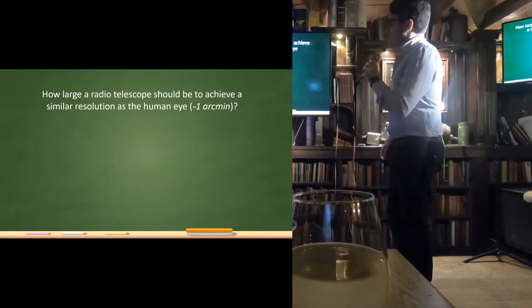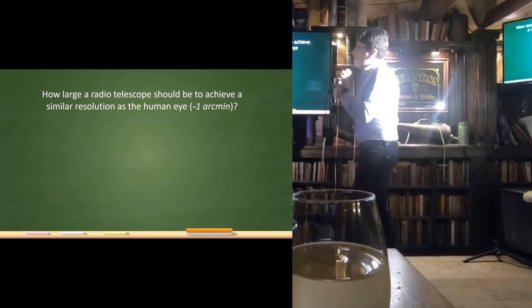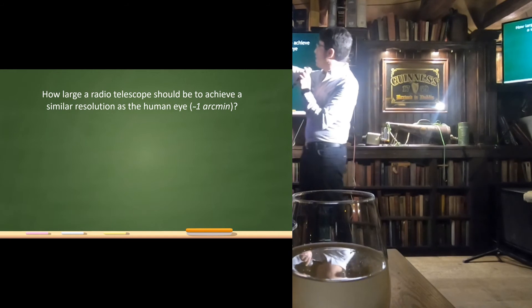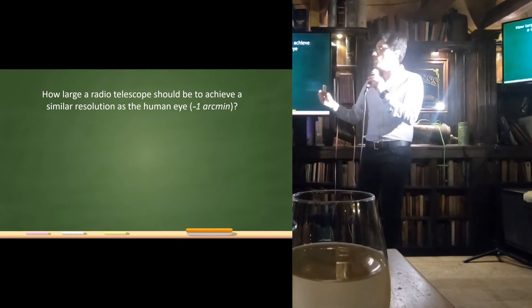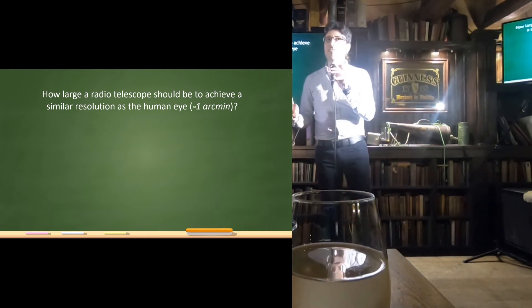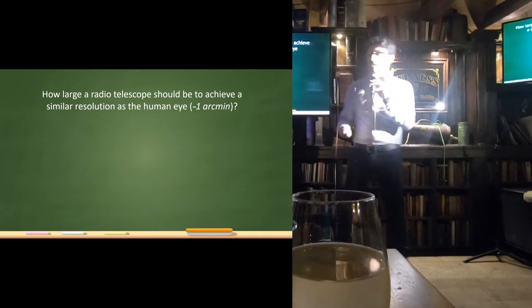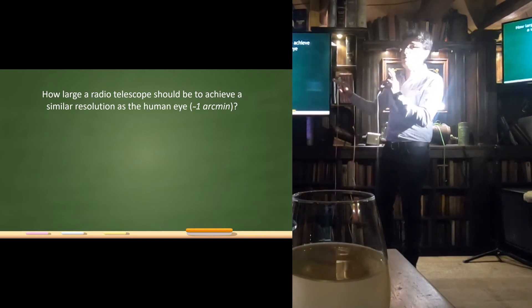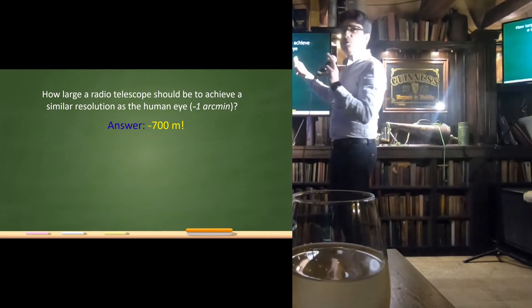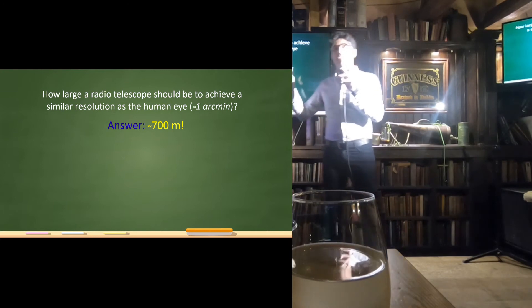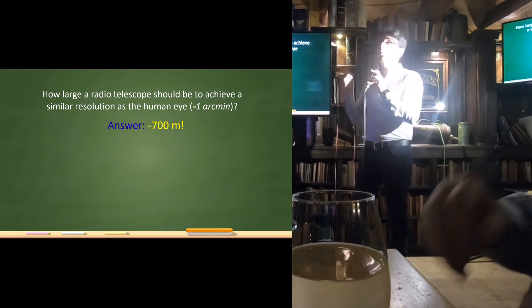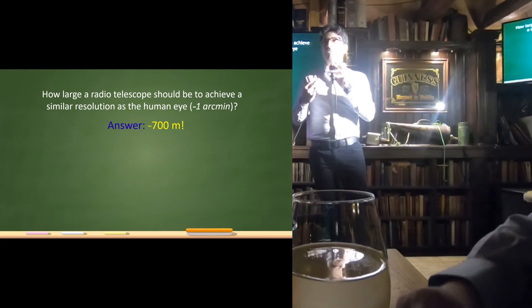I also made another exercise. So, I was asking myself just to understand how such telescope can be good. I was asking to myself how large a radio telescope should be to achieve a resolution which is comparable at least to the one of human eyes at optical wavelengths. That is about one arc minute, let's say. So, if you do the math, what you obtain is this value. So, you know what does this mean? This means that even the largest radio telescope, single dish radio telescope in the world, has a resolution which is worse than our eyes. You know why this thing gets challenging?